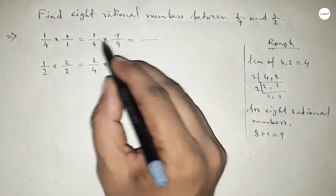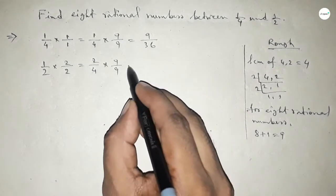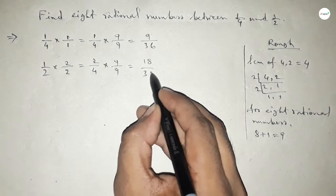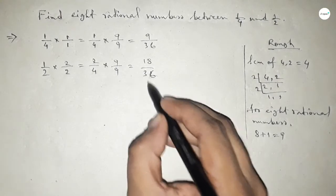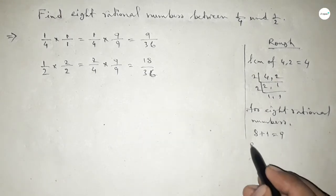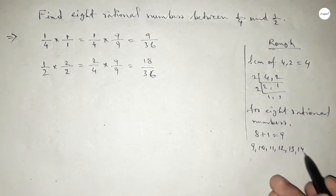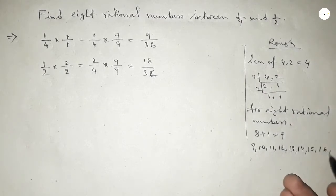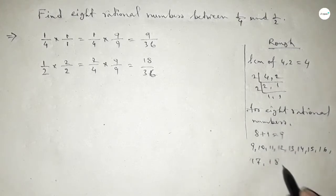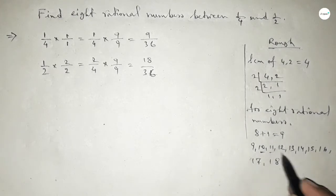Now between 9 to 18, we can get 8 natural numbers. And by these natural numbers, we can form 9 rational numbers.